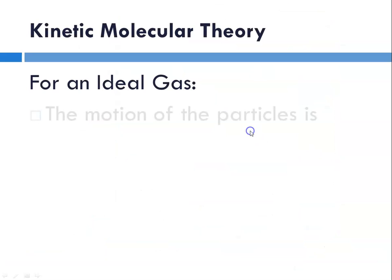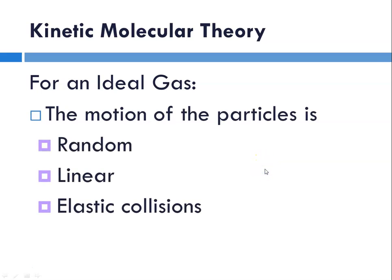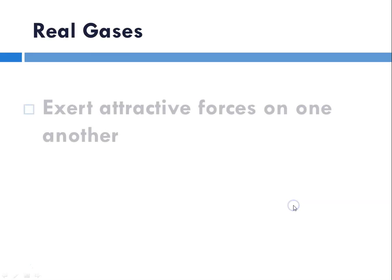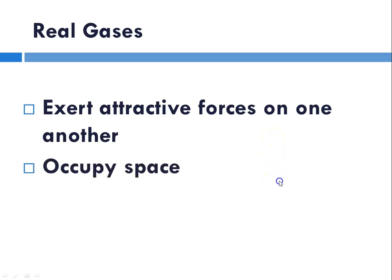For an ideal gas, the motion of the particles is random and linear, and the collisions are elastic, meaning no energy is lost when the particles collide. Real gases actually do attract and repulse one another. They exert these forces and occupy space.